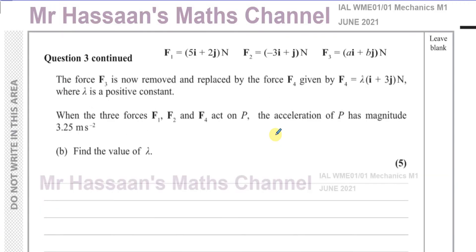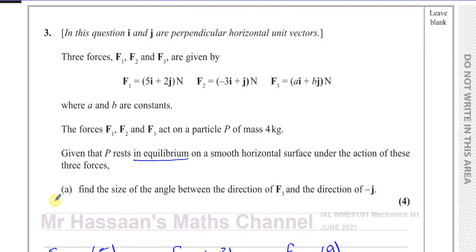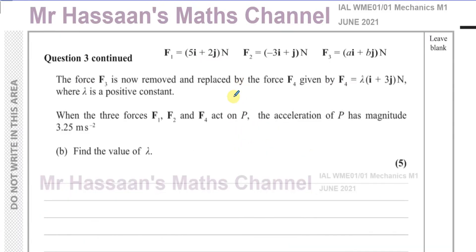Now for 3 part B. The force F3 is now removed and replaced by the force F4. And F4 is given by lambda times i plus 3 lambda j newtons, where lambda is a positive constant. When the three forces F1, F2 and F4 act upon P, the acceleration of P has a magnitude of 3.25 meters per second squared. We're going to be dealing with acceleration, so we have to know the mass. The mass of P is 4 kilograms.